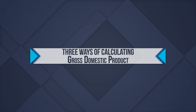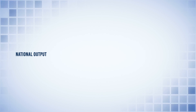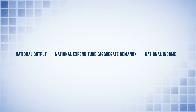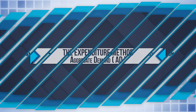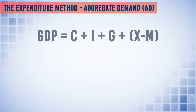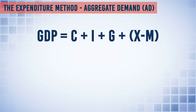There are three ways of calculating GDP, all of which in theory should sum to the same amount. They are: national output value, national expenditure (that is, aggregate demand value), and national income value — in theory, all these values will be equal. The first method is the expenditure method, i.e. aggregate demand. The full equation for GDP using this approach is: GDP = C + I + G + X − M.